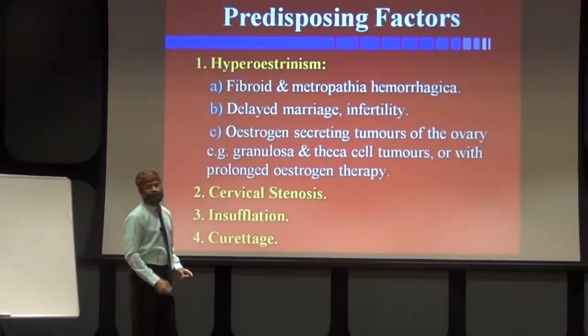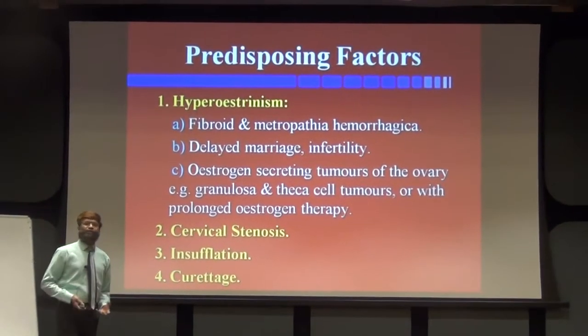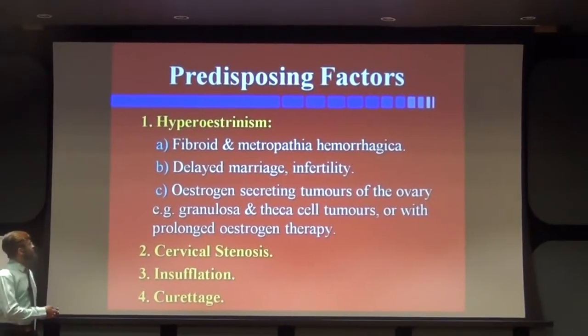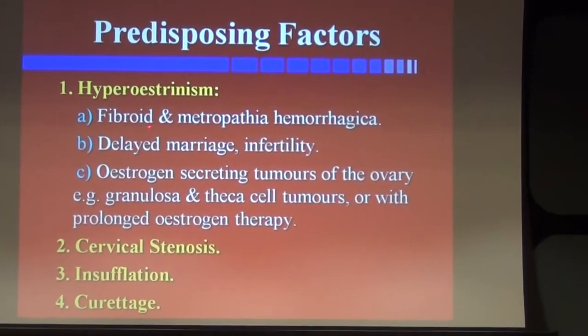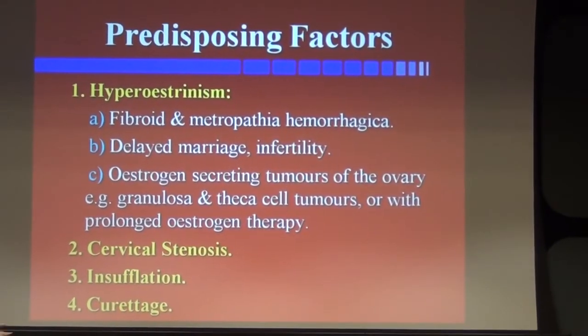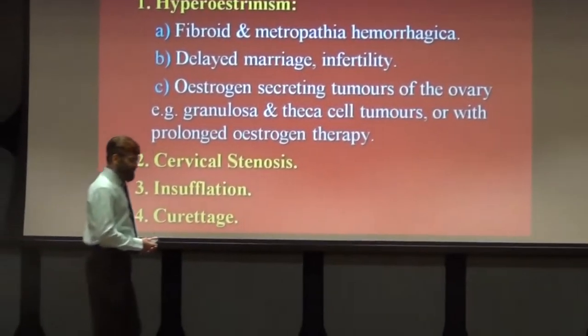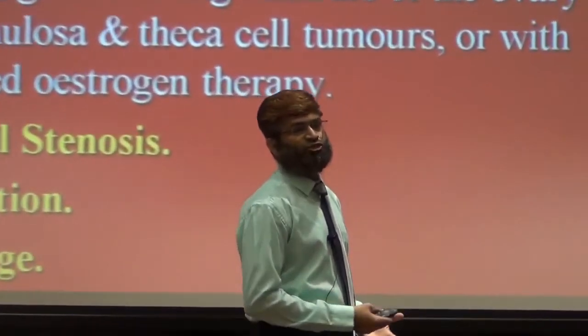Next, let's go to predisposing factors. First is fibroids — hyperestrogenism seen in fibroids and metropathia hemorrhagica. Fibroids are again seen in nulliparous females with excessive estrogen levels in their body, making them more prone to the condition of endometriosis. Delayed marriage is another factor. Nowadays, the marriage age is getting postponed to thirties, thirty-fives, forties, and because of excessive estrogen working in the body and uterine cavity, this leads to endometriosis.